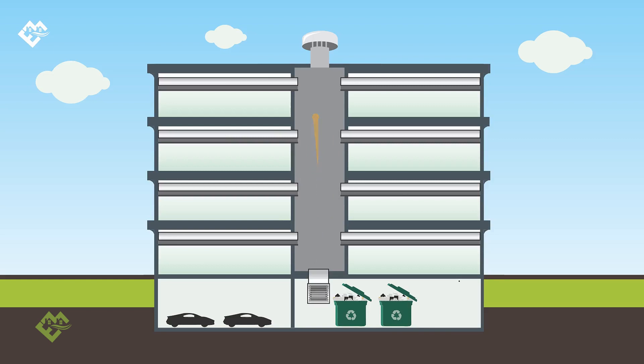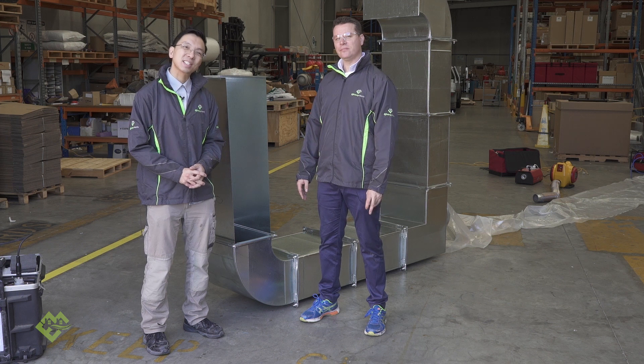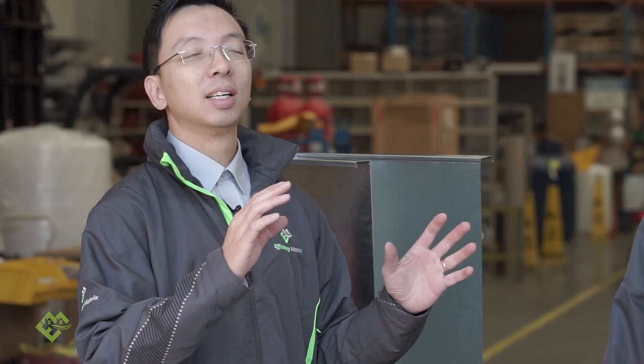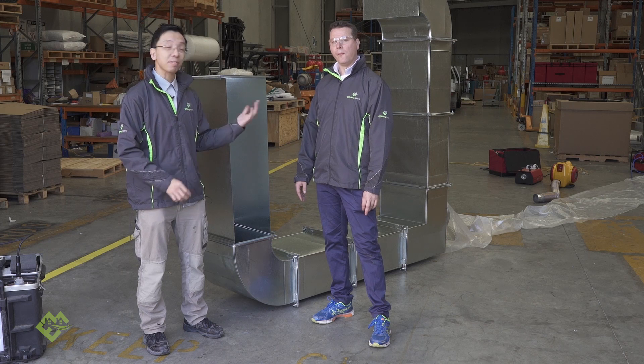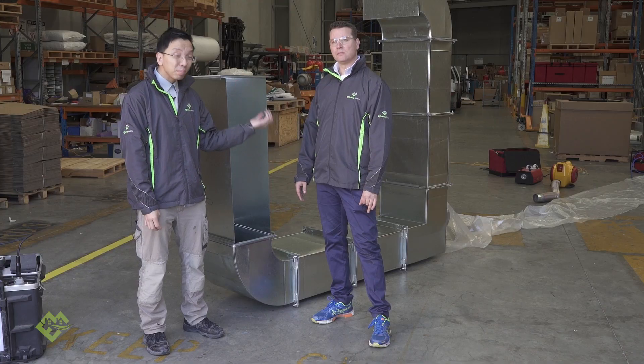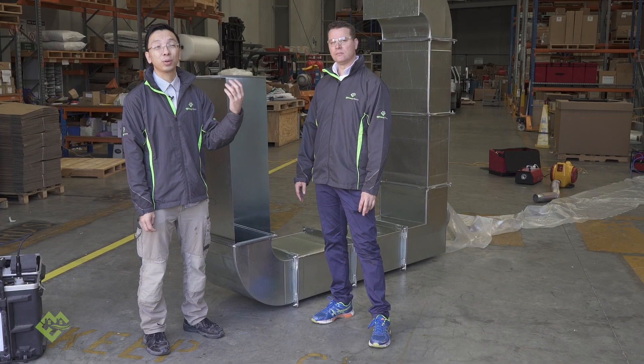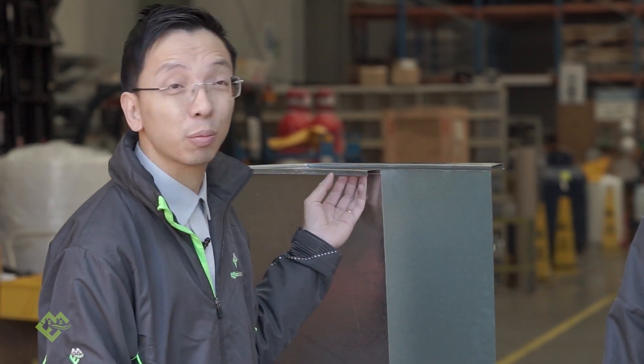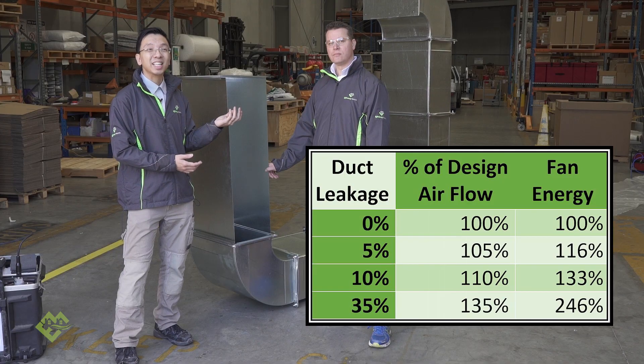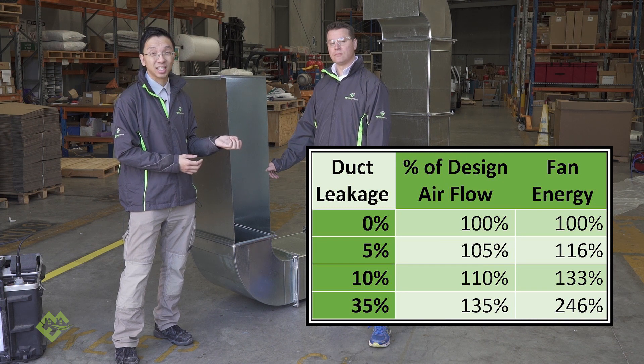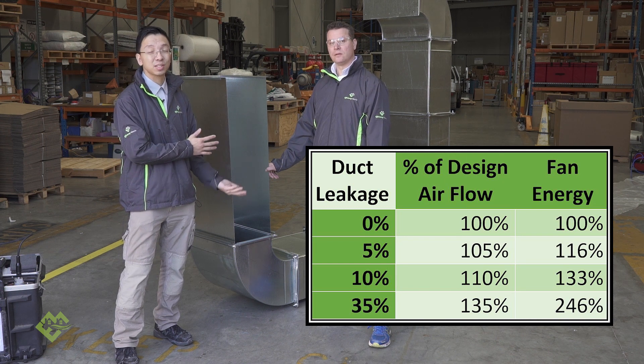Leakage in ductwork is not as straightforward as other wastage because the energy required to generate airflow follows a cube rule. A five percent increase in airflow translates to a 17 percent increase in fan energy. A ten percent increase results in a 37 percent increase. In the worst case, if your ductwork is leaking at 35 percent, you are using an extra 140 percent of energy on top of the original design — a huge implication for fan energy requirements.